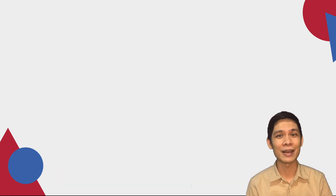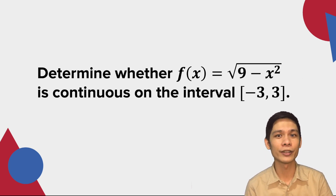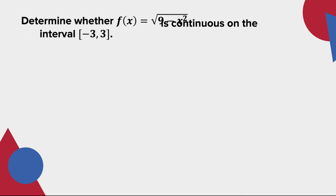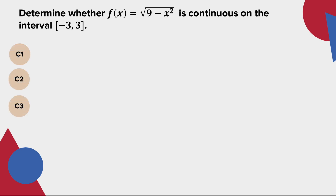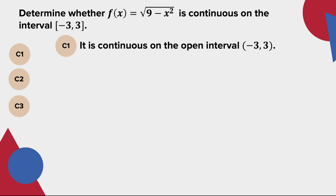For our next example, let us identify whether f(x) = √(9 - x²) is continuous on the interval [-3, 3]. For the first condition, since it is a square root function, it is only defined if 9 - x² ≥ 0, meaning the value is 0 or a positive number. Therefore it is continuous on the open interval (-3, 3).